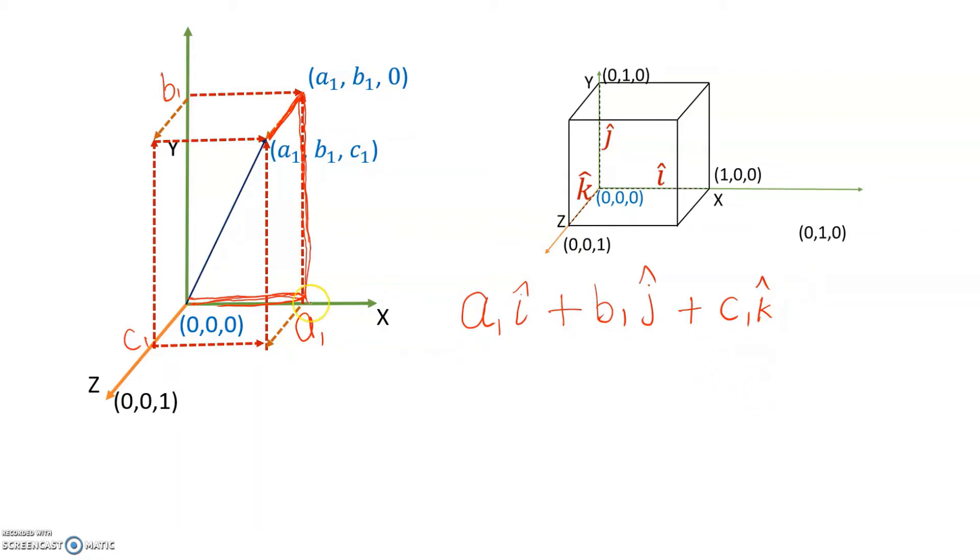Now I'm going to project it further into the z-axis, I'm going to bring it down like this so I'm going to call this as plus c1 k-cap. So can you see how this vector starts from 0 origin and ends at (a1, b1, c1) can be represented as a1 i-cap plus b1 j-cap plus c1 k-cap. So this is a position vector representation.